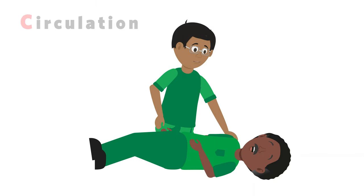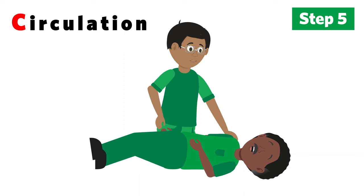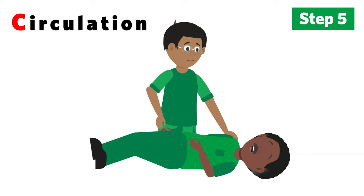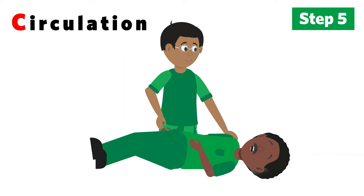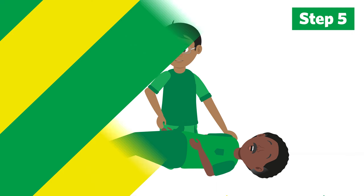C is for circulation. Check the casualty for signs of bleeding. Only do this if they are breathing normally.